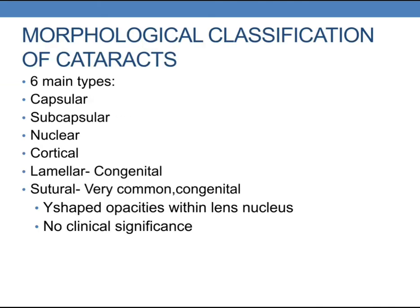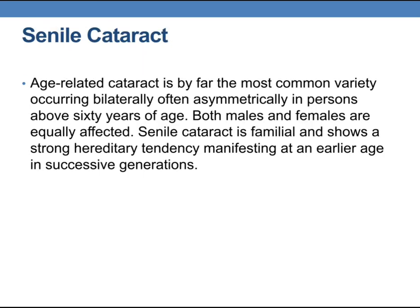Regarding the morphological classification of cataracts, there are six main types: capsular, subcapsular, nuclear, cortical, lamellar, and sutural. The sutural type is very common and is congenital. The Y-shaped opacity is within the lens nucleus and has no clinical significance.